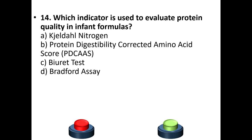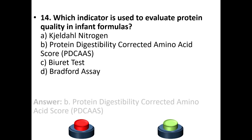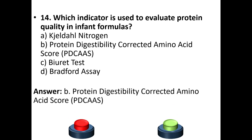Fourteenth question: Which indicator is used to evaluate protein quality in infant formulas? Options: Kjeldahl nitrogen, protein digestibility corrected amino acid score (PDCAAS), biuret test, Bradford assay. Your answer is option B: Protein digestibility corrected amino acid score.